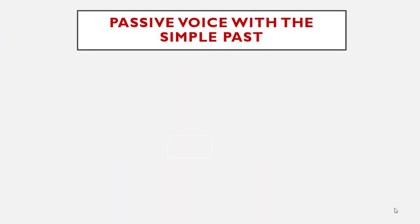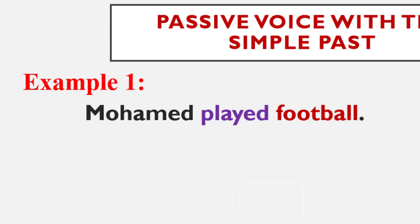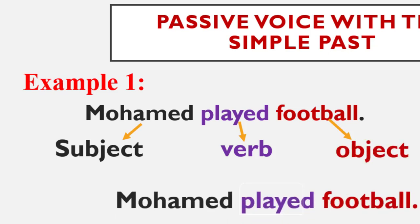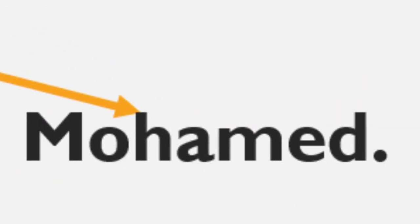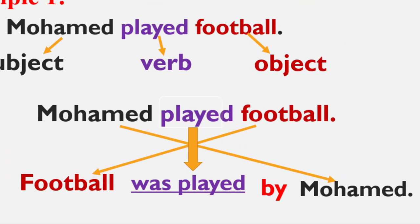Now let's move to the passive voice with the simple past. Example: Mohammed played football. Mohammed is the subject, played is the verb conjugated in the simple past, and football is the object. Football becomes the subject and Mohammed becomes the object. Since the verb is in the simple past, verb to be must also be in the simple past — was or were. Here football is singular so we write: football was played by Mohammed.